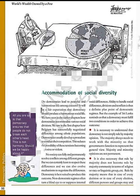On page 96, we have to discuss accommodation of social diversity. Do democracies lead to peaceful and harmonious life among citizens? It will be a fair expectation that democracy should produce a harmonious and peaceful social life. As we have seen in the power sharing chapter, democracies accommodate various social divisions — power sharing avoids conflict between them. Belgium successfully negotiated differences among its ethnic population by following a policy of accommodation, resulting in peace. Democracies usually develop procedures to conduct their competition, which reduces the possibility of tensions becoming more explosive or violent.